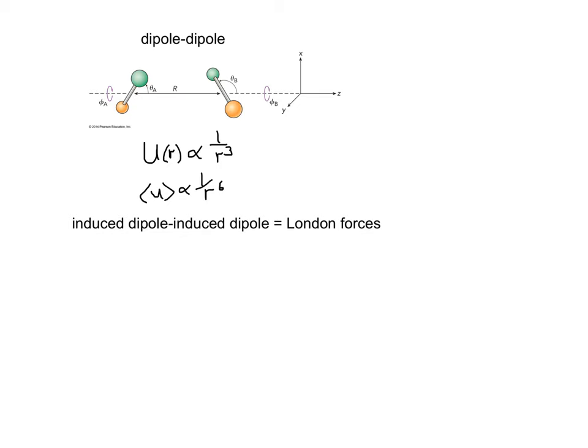If neither molecule has a permanent dipole, we can still have induced dipole-induced dipole, or London forces. The interaction energy for these types of forces is also proportional to one over r to the sixth power.